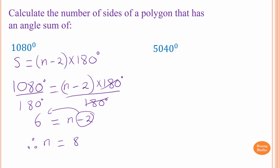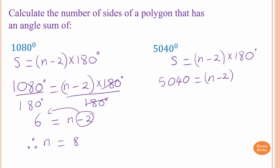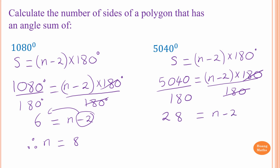Second one: the sum of interior angles of a polygon is 5040 degrees. The rule is S = (n − 2) × 180. So 5040 = (n − 2) × 180. Dividing both sides by 180 gives 28 = n − 2. Moving the negative 2 across gives n = 28 + 2 = 30. Therefore n equals 30.